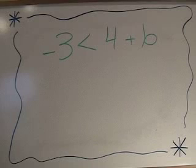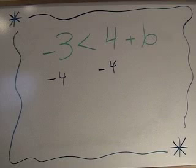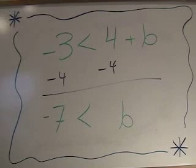Let's try one more. Try solving and graphing negative 3 is less than 4 plus b. We would subtract 4 from both sides of the inequality, and we will see that negative 7 is less than b.